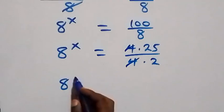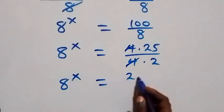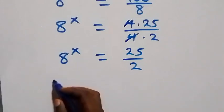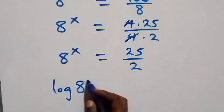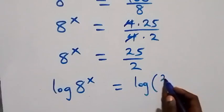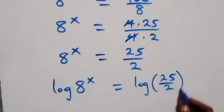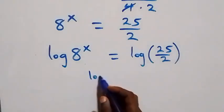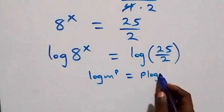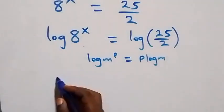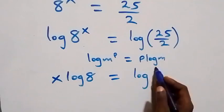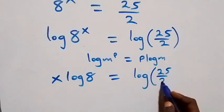Which implies we have a raised to power x equals to 25 over 2. From here we take the log on both sides and we apply the power rule of logarithms: log m raised to power p is the same thing as p log m. That gives us x log 8 equals to log of 25 over 2.